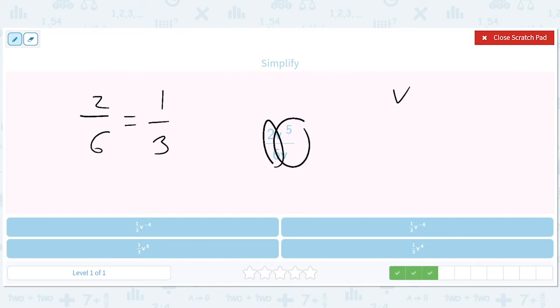And v to the 5th over v. Well, I wasted time there. You already knew that. It's v to the 5. This is a v to the 1, right? So this equals v to the 4th. So we have 1 third v to the 4th power.